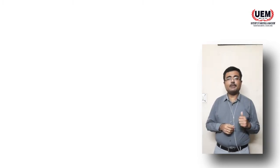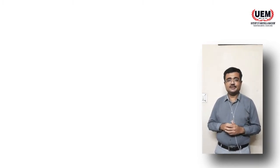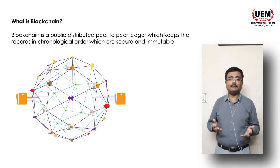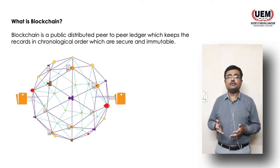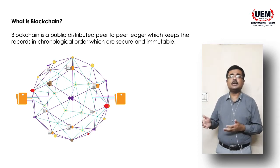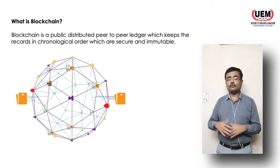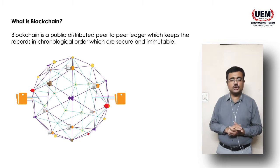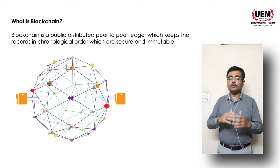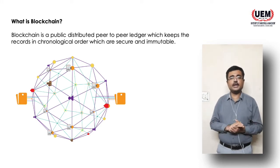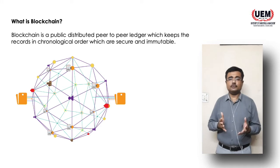If you go by the public definition of blockchain that is given in the book, it says: blockchain is a public distributed peer-to-peer ledger that keeps the records in a chronological order which are secure and immutable. Now when I heard this definition of blockchain, I thought it is a very, very difficult one — and you all will be having the same thing in your mind. But I am here to make things simple with an example.